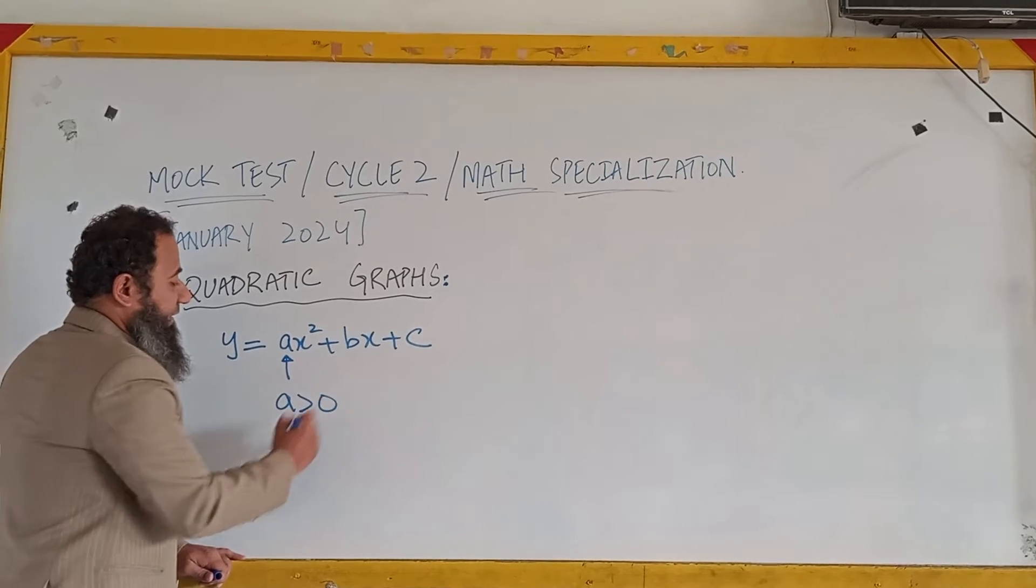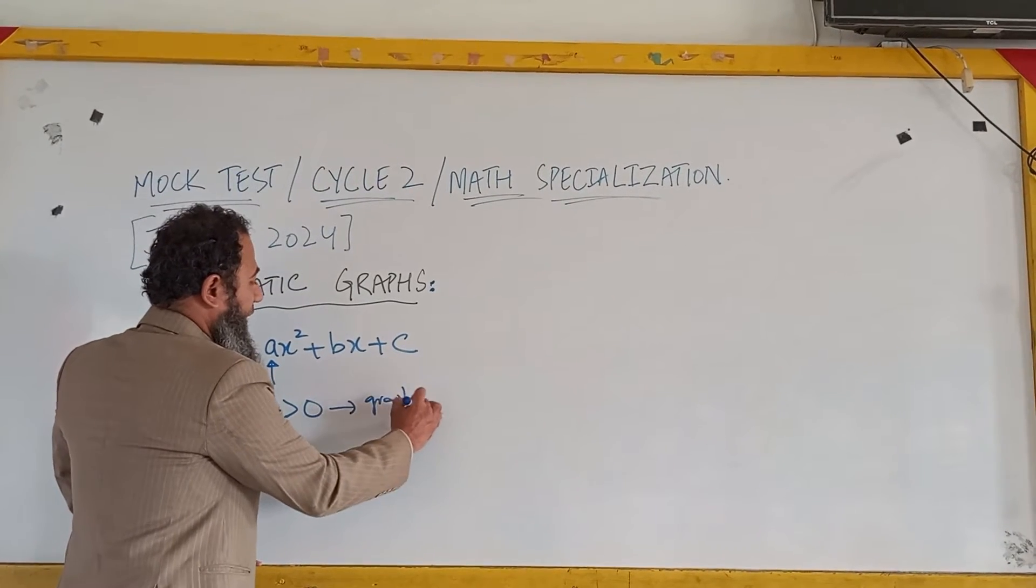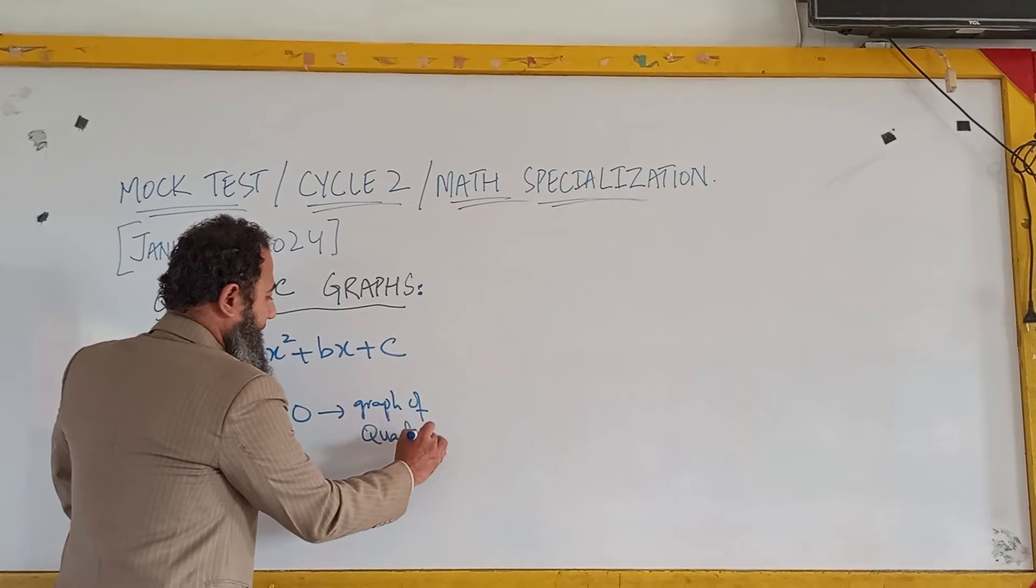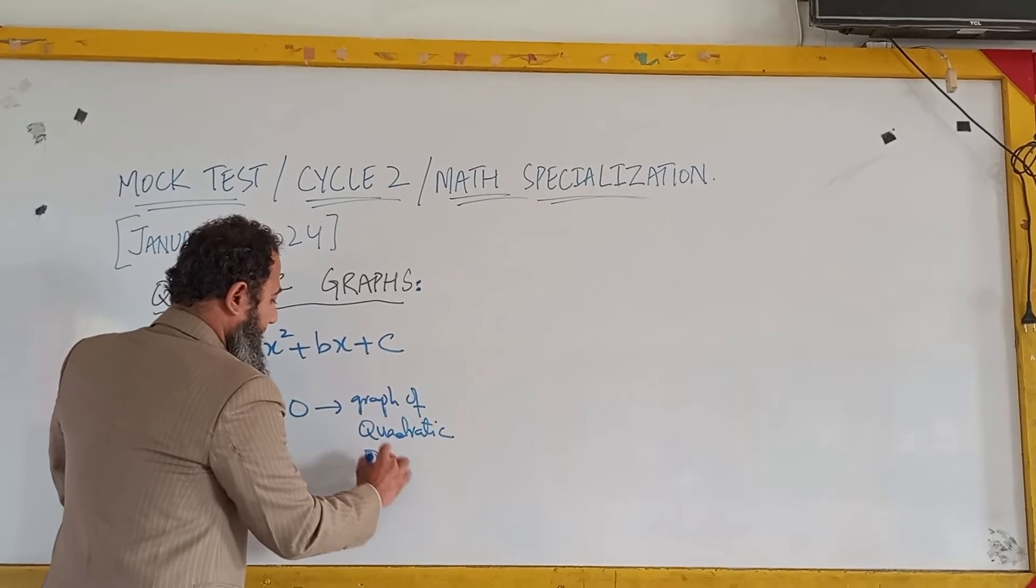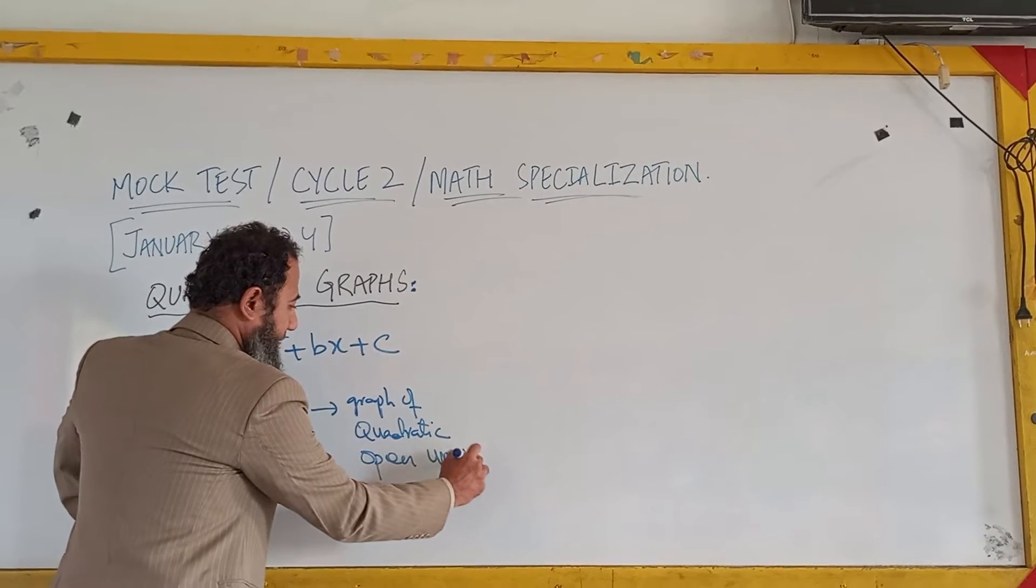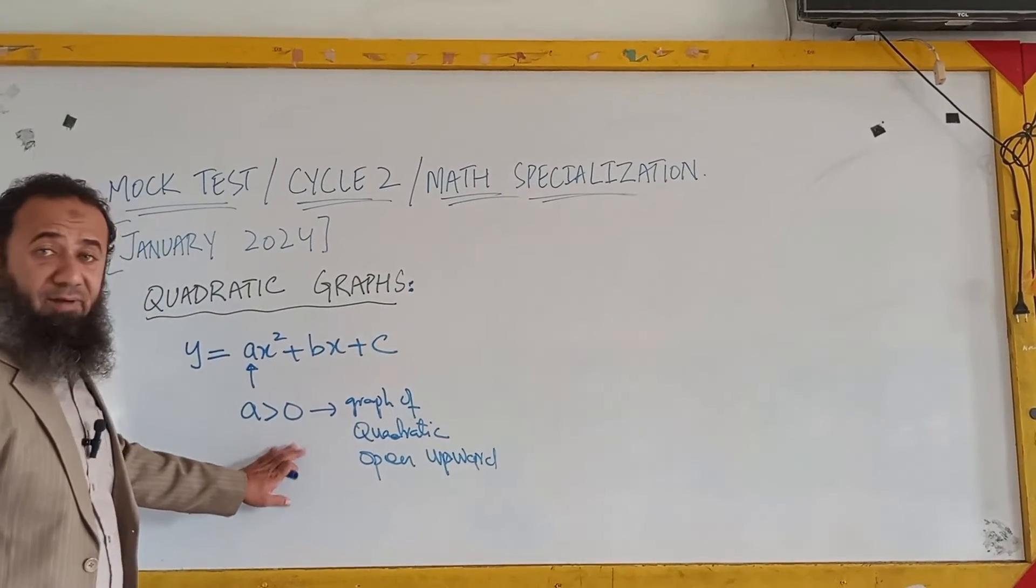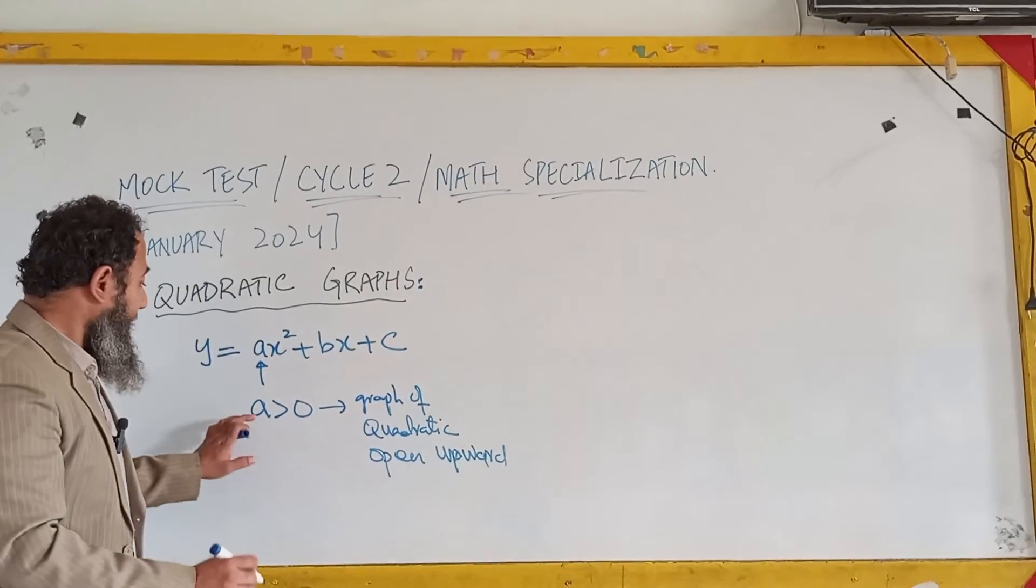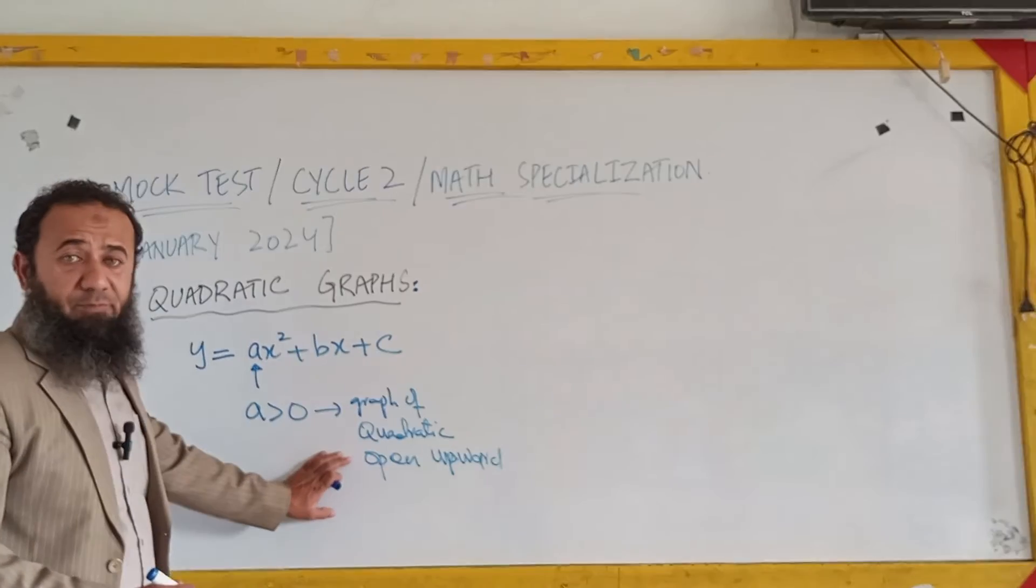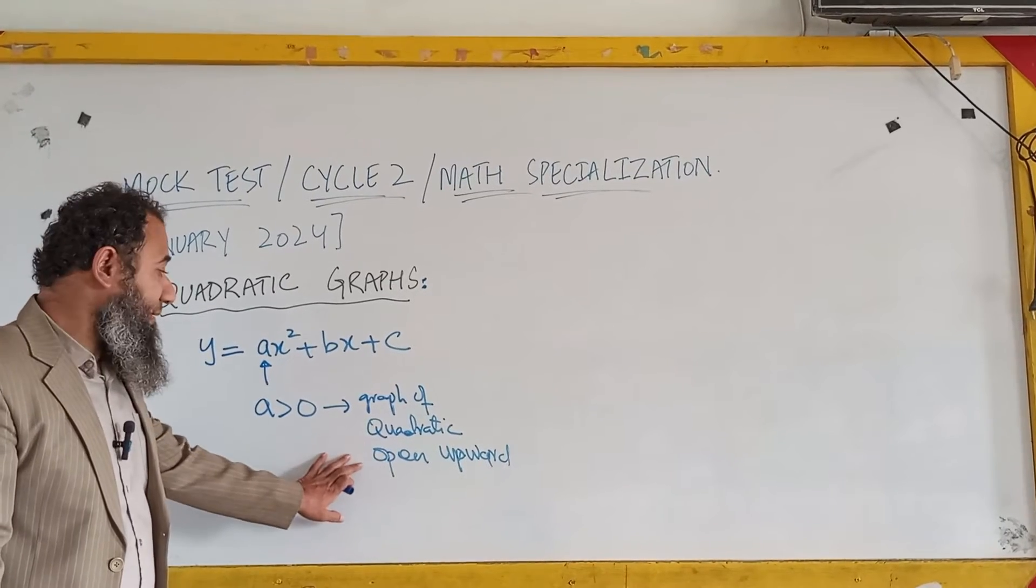If it is greater than zero, the graph of the quadratic equation opens upward. So let me repeat this thing, this is a very important concept. When the value of a is greater than zero, you will observe that the curve of the quadratic equation will always open upward.